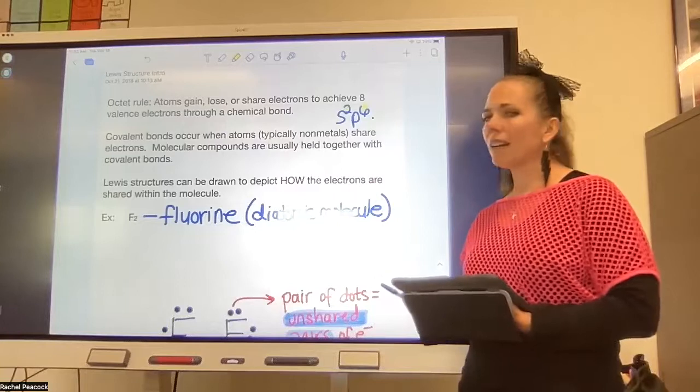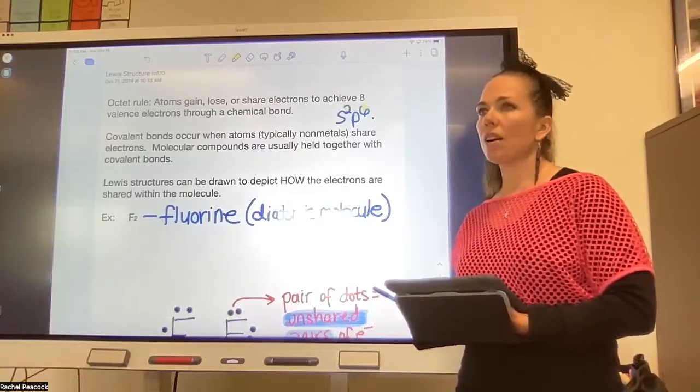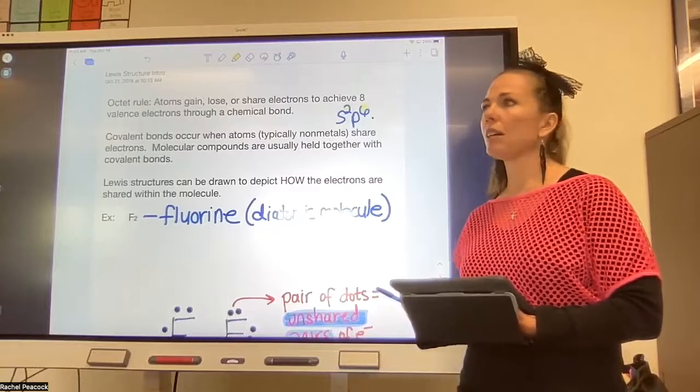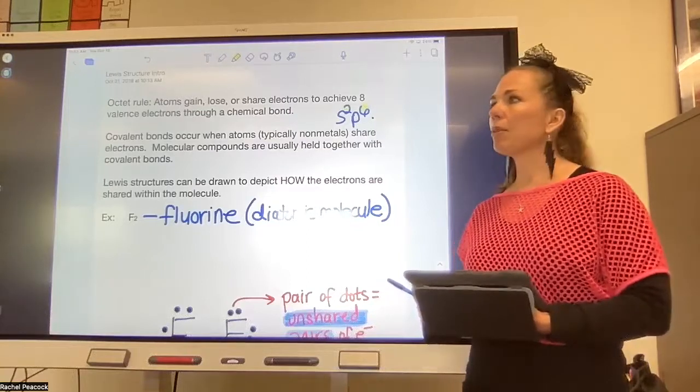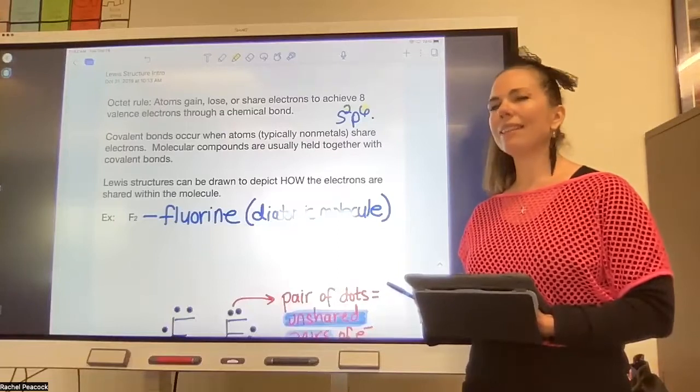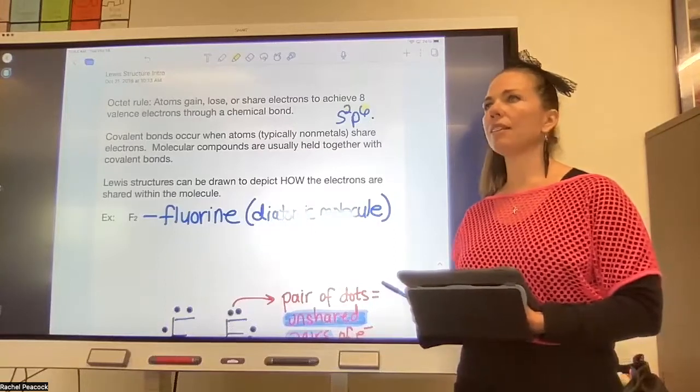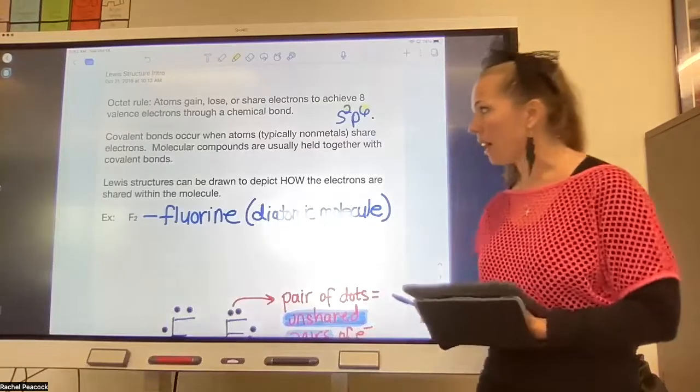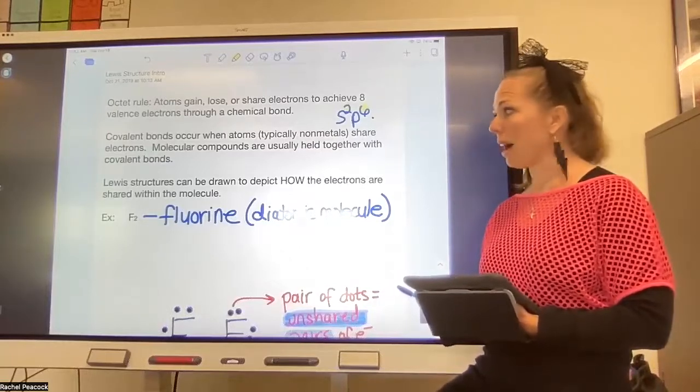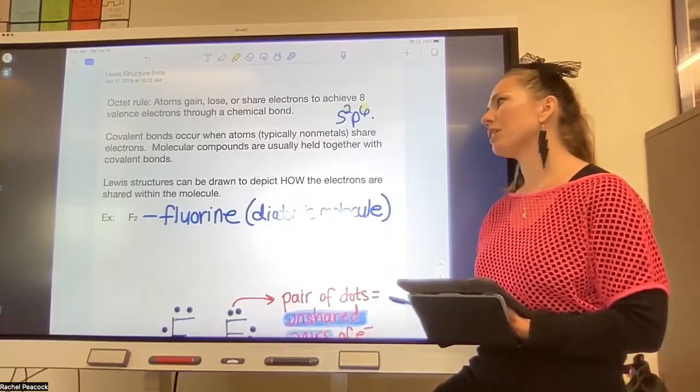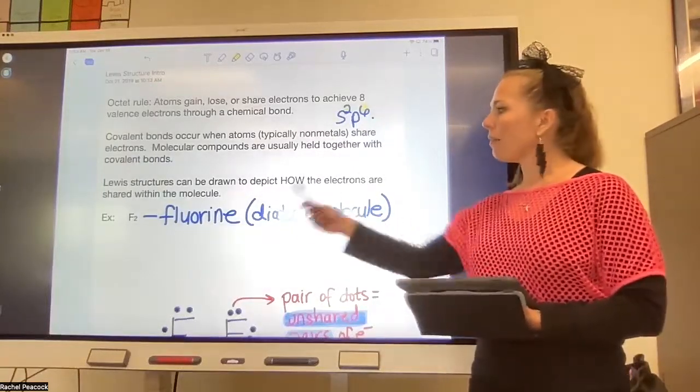Covalent bonds, which is what we're going to focus on today, are when elements share electrons as a way to achieve eight valence electrons. So typically it's non-metals, because all non-metals are looking to gain—for the most part, because that's the easiest way to get eight. Because they're looking to gain electrons, it's easier for them to share when they're bonded to other non-metals. So because of this, molecular compounds are held together with covalent bonds. And if you recall, we draw Lewis structures to show how the electrons are shared between atoms.